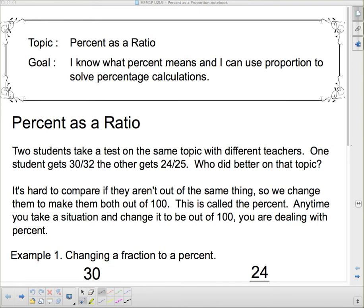What is percent anyway? Two students take a test on the same topic with different teachers. One student gets 30 out of 32, the other gets 24 out of 25. Who did better on that topic? It's hard to compare if they aren't out of the same thing. So we change them to make them both out of 100. This is called percent and that literally means out of 100.